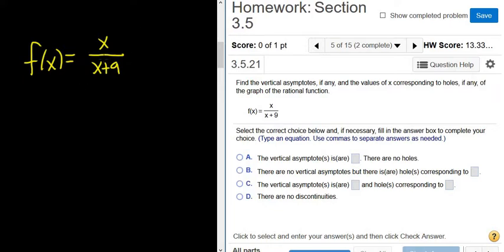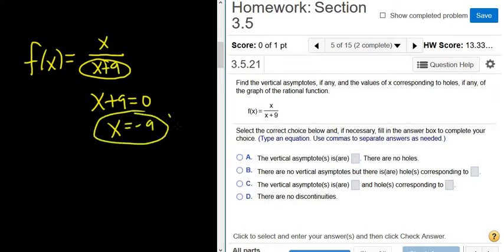To find vertical asymptotes, you simplify first, which we did - there's nothing to simplify. Then you set the bottom equal to 0, so x plus 9 equals 0. Subtract 9, you get x equals negative 9, and that's a vertical asymptote.